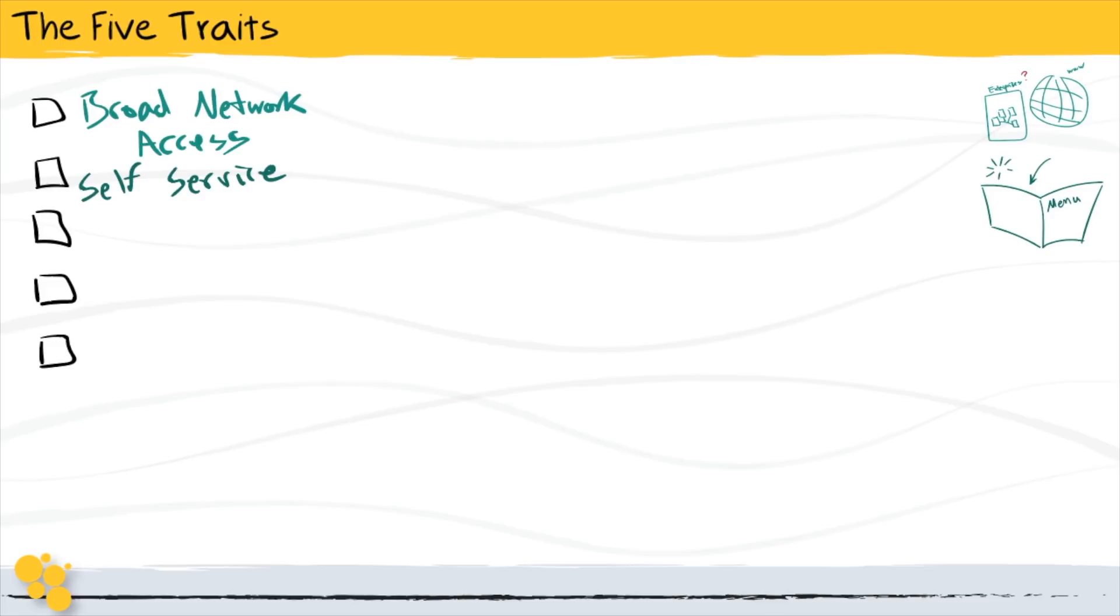Now, if you're going to let people do self-service administration, then the third one on here becomes the necessary evil that goes along with it. And that is measured service. And there's really two different sides to this. If we're letting people do self-service and they can use menus to create things like virtual machines, then in many situations, we're going to need to know how long those virtual machines run for.